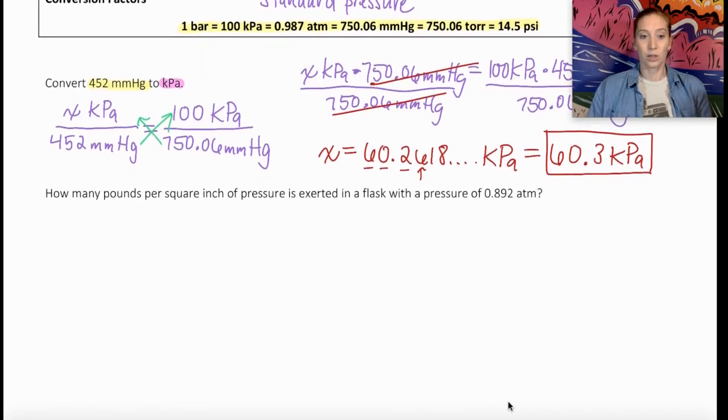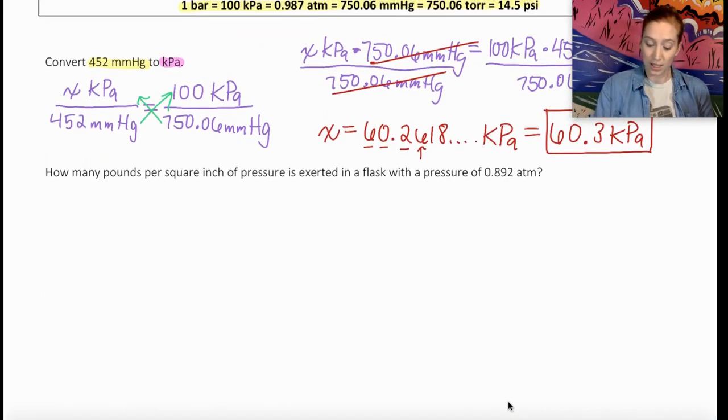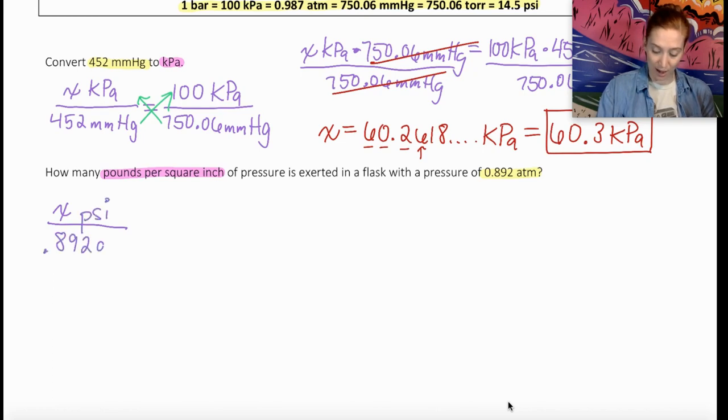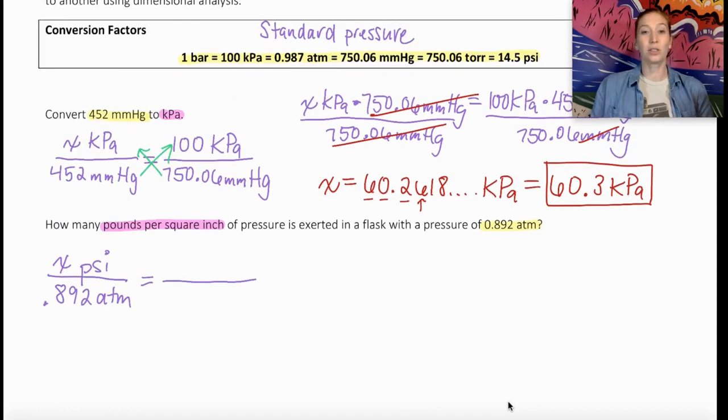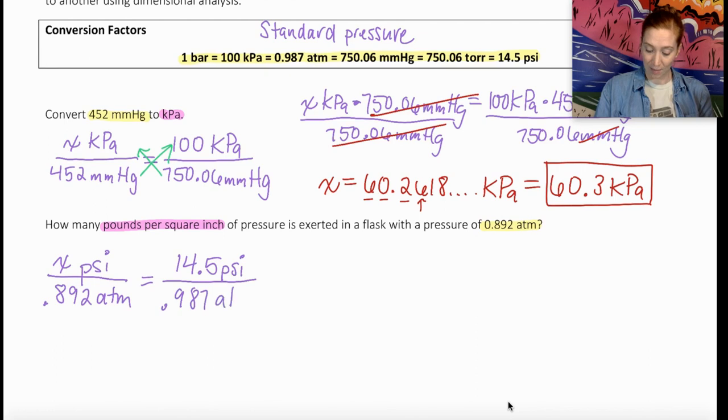Pretty straightforward. Let's do another example using different units. This time I want to know how many pounds per square inch of pressure there is exerted on a flask with a pressure of 0.892 atmospheres. So I'm going to set this up the same way. I'm going to do a little less work to show you that you don't have to do all of this. So I want to know how many PSI there are in 0.892 atmospheres. So again, I want to use those standard pressure measurements to set up my conversion factor. So 14.5 PSI on top and 0.987 atmospheres on the bottom.